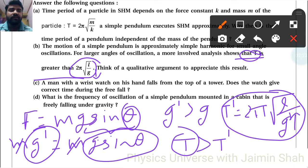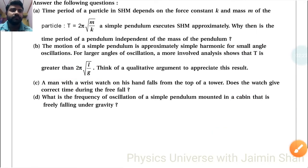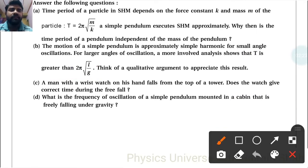Then, a man with a wristwatch on his hand falls from the top of a tower. Does the watch give correct time during the free fall? Because of free falling, it will not depend on the timing of the wristwatch, because wristwatch doesn't work on simple pendulum. Whether it is free falling or going with some acceleration, it doesn't affect the timing on the wristwatch.